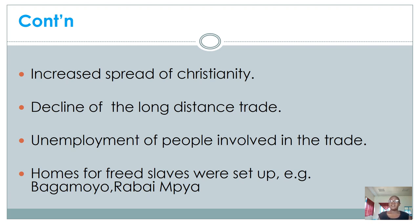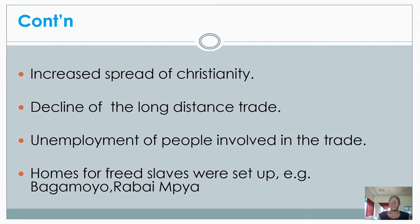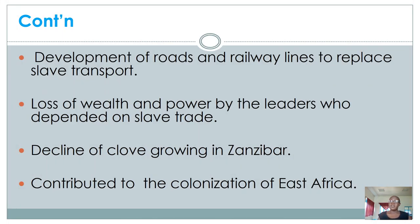When the trade was ended, many freed slaves did not have anywhere to go. The people who ended the trade decided to put up homes for freed slaves, especially those who had nowhere to go. Many of these homes were set up in Bagamoyo, Rabai, Impia, and many other places. Roads and rail lines were also put in place to replace slave transport — that is why the Gandari railway was built. Leaders who had gained wealth and power from this trade lost it, and clove growing was promoted as an alternative.